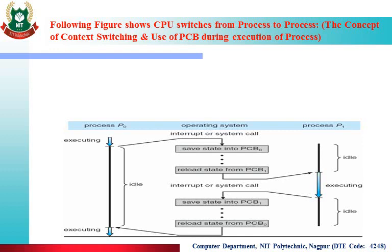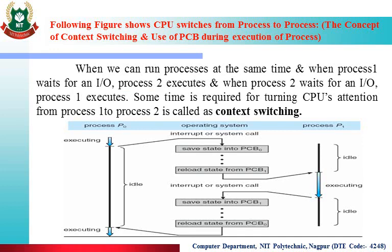This diagram shows context switching. When process P0 is in execution, after some time we stop its execution by calling an interrupt. We save state into PCB0 — the operating system saves the updated data of process P0 into PCB0. Then the processor becomes free. On the right side, process P1 was ideal up to that point, but now P1 is ready for execution. The operating system sends P1 to the CPU, and when it goes to the CPU it reloads its data from PCB1.